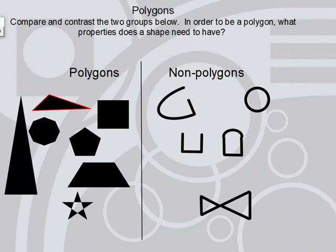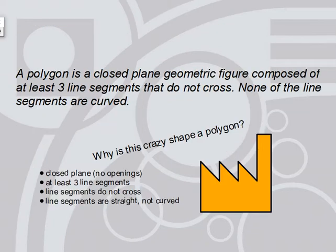Compare and contrast the two groups below. In order to be a polygon, what properties does a shape need to have? Hopefully you noticed that a polygon is a closed plane geometric figure composed of at least three line segments that do not cross. None of the line segments are curved.